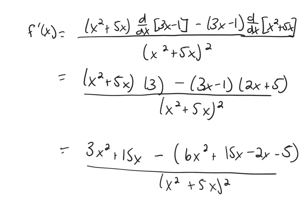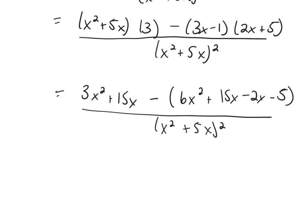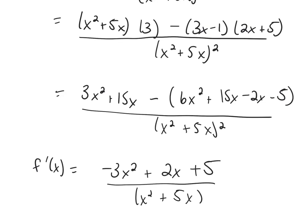And then combine the like terms together, and you'll get that f prime of x is negative 3x squared plus 2x plus 5 over x squared plus 5x squared.